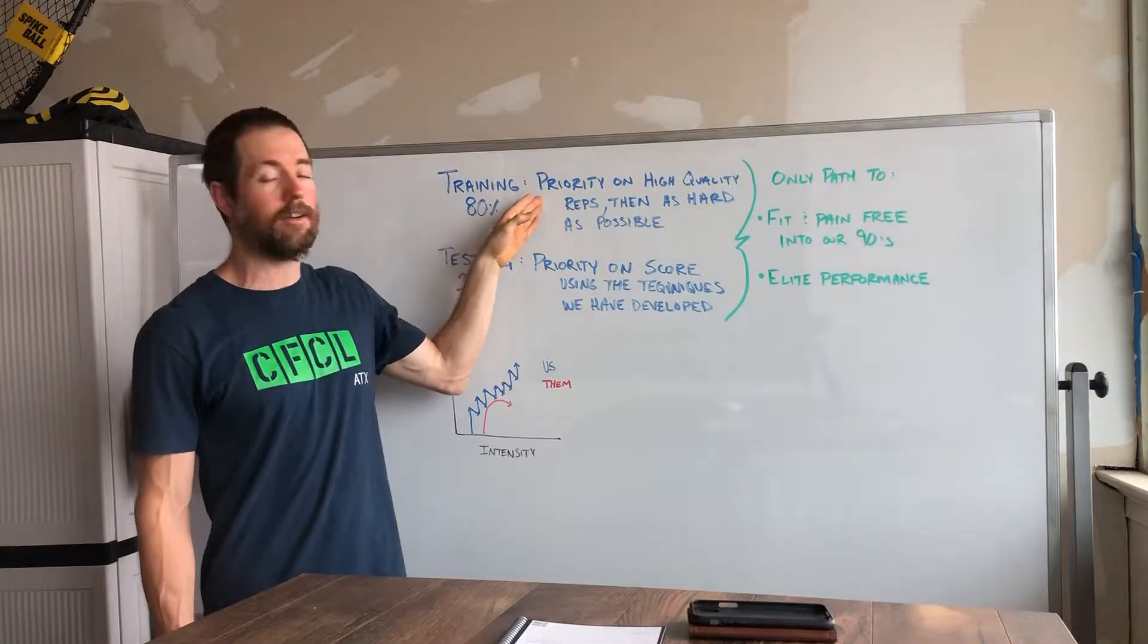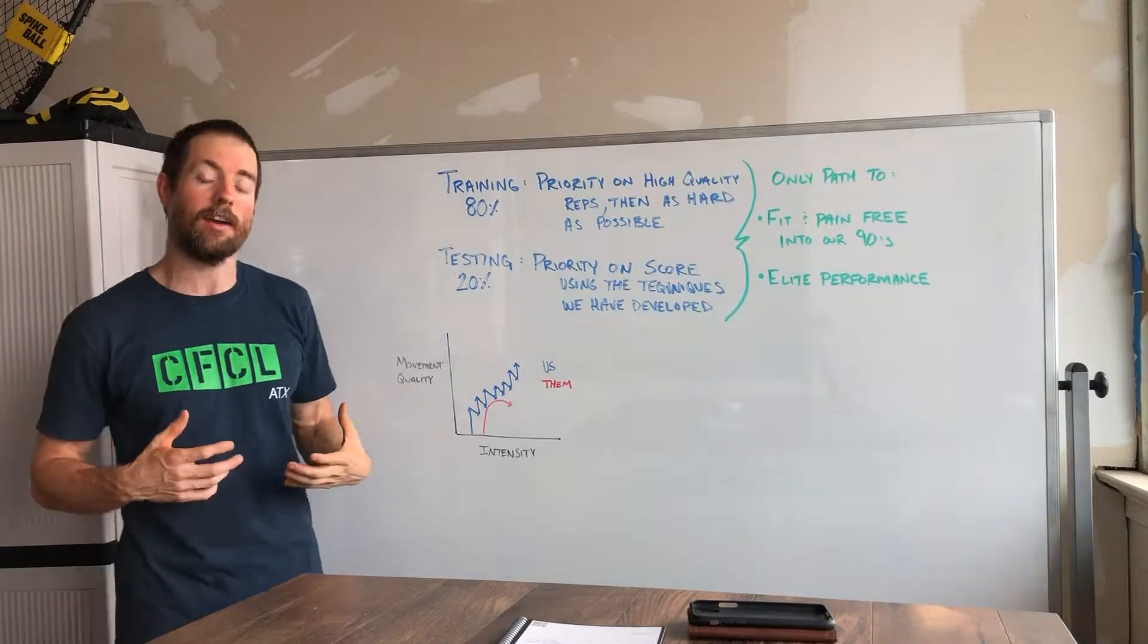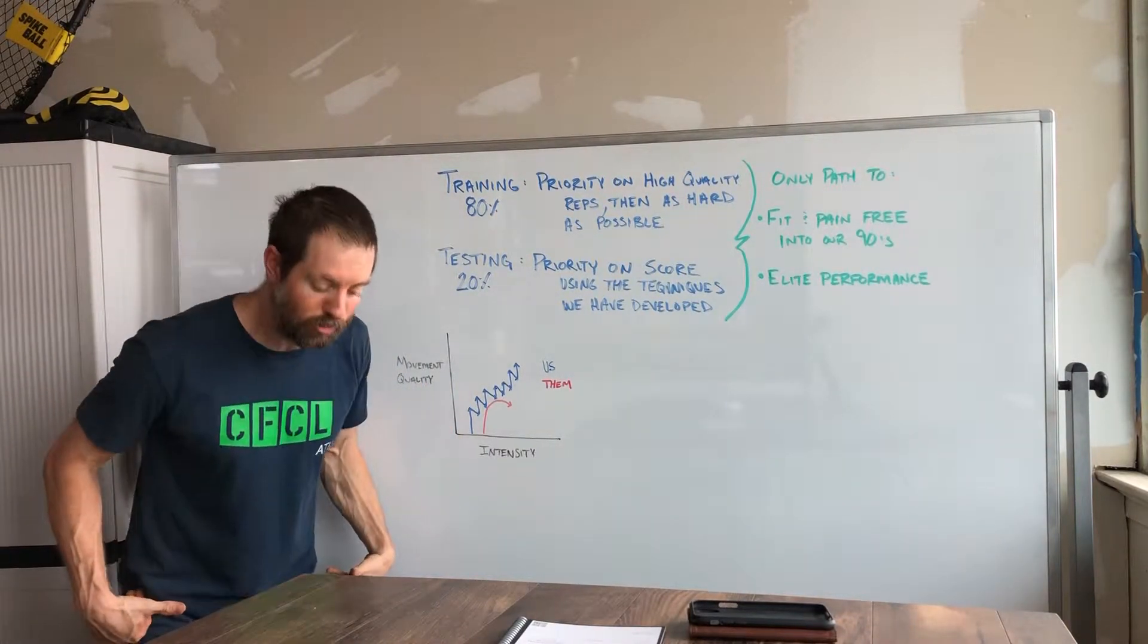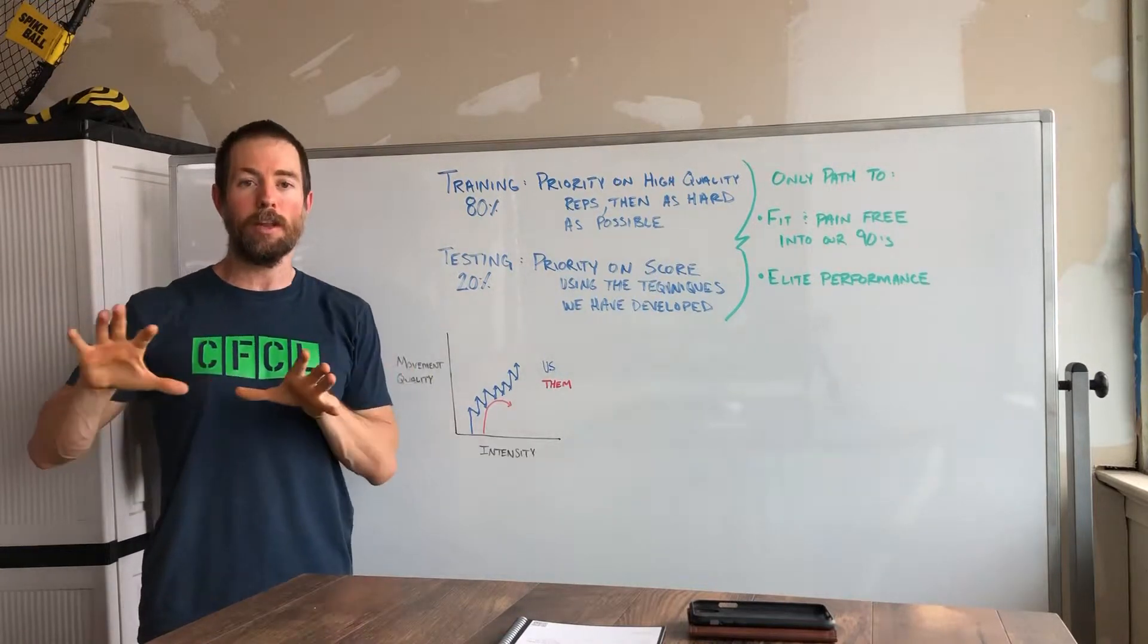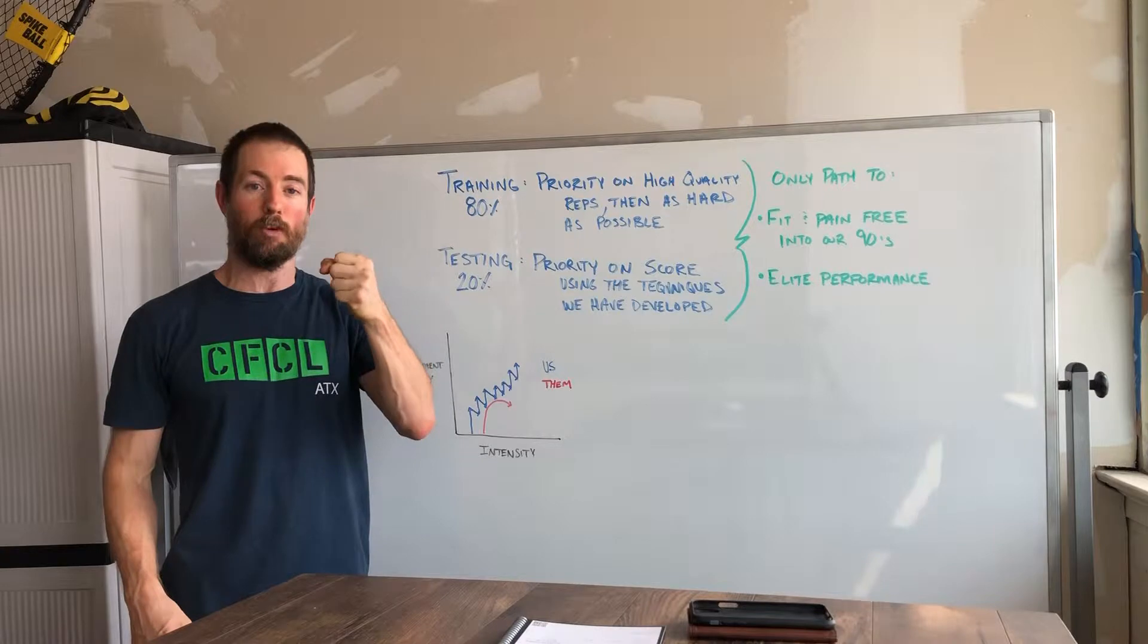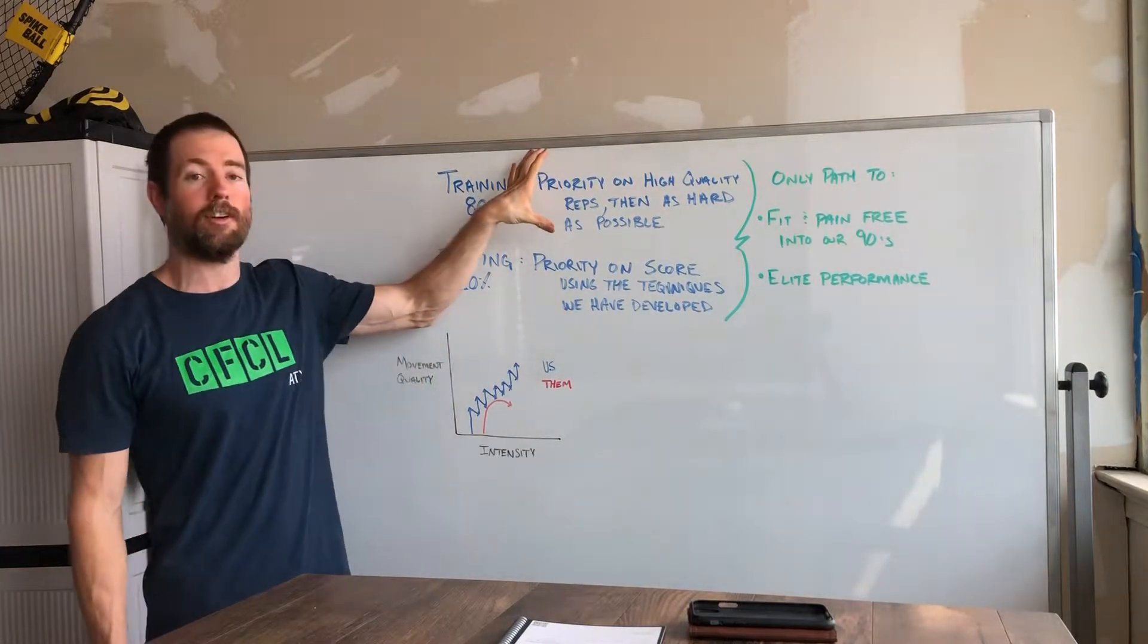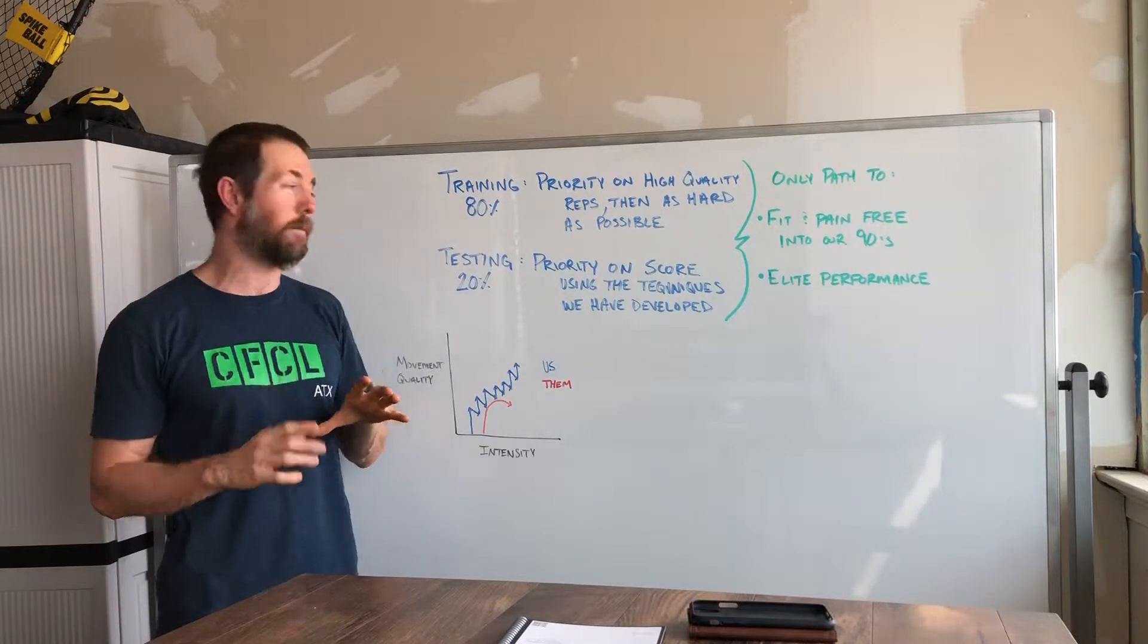For our four out of five workouts a week, we're looking at prioritizing high quality reps and then going as hard as you can. This isn't moving extremely slowly and moving really lightweight. We're going to really push the pace on everything as much as we can, but with the priority of quality reps. These workouts are still hard, but we're not going to try and cut any corners and we're not going to let things get too sloppy.